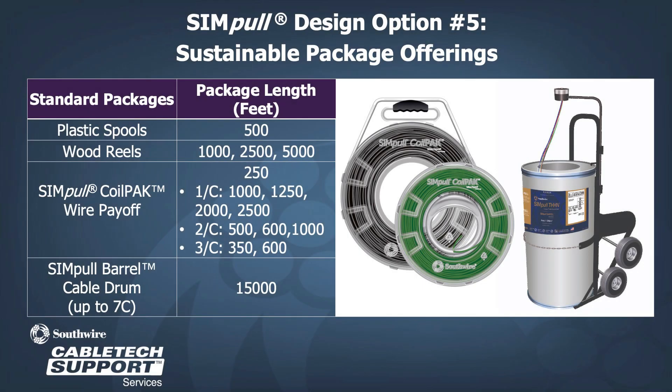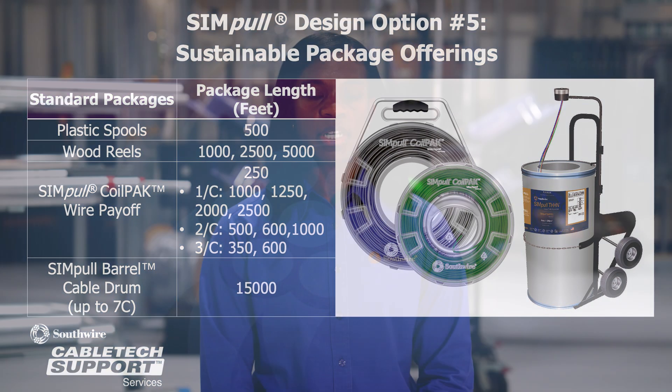Our fifth design option is our sustainable packaging. We offer plastic spools for 500-foot package lengths and wooden reels for 1,000, 2,500, and 5,000 feet package lengths. As part of our Simple Solutions, we offer Simple Coil Packs for 1,000, 2,000, and 3,000 conductor packages in a variety of lengths, and we offer Simple Barrel Cable Drums for up to seven conductors for much longer lengths.